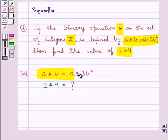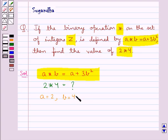So in this we put a equal to 2 and b equal to 4. Therefore we get 2 star 4 is equal to 2 plus 3 into 4 square. That is, this is equal to 2 plus 16 into 3.